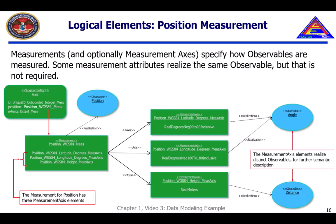The logical level position measurement demonstrates the way the axis elements realize different observables than the measurement to which they belong. The measurement position WGS84 is a three-dimensional measurement with one axis for each of latitude, longitude, and altitude or height. The measurement realizes the observable position, but the latitude and longitude axes each realize the angle observable as bounded degrees, and the height axis realizes the distance observable as meters.